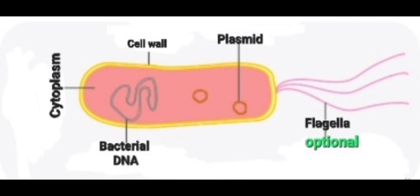There is no well-defined nucleus, but a DNA material is present in the central region. This DNA material is in the form of a single circle and is not enclosed in a nuclear envelope, but it is attached to the cell membrane at some point. The cytoplasm contains certain vacuoles, granules, and in some cases chlorophyll may also be present. Sometimes a slimy protective layer called capsule is also present outside the cell wall.